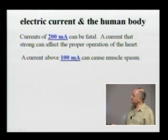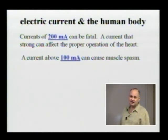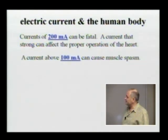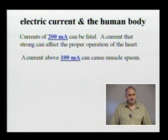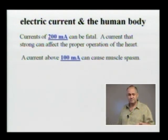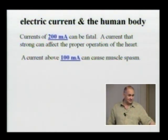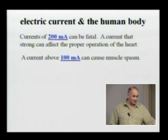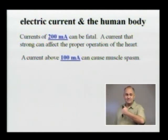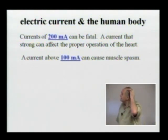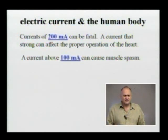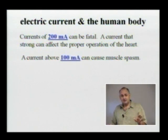Half of that current — about 100 milliamps — can cause muscles to contract, which is the real problem with electrical accidents. A person can grab a wire and be unable to release it because the electricity causes muscle contraction. So whenever you want to touch a wire to check if there is electricity, don't touch it with your palm — touch it with the back of your hand, so that if muscles contract, your hand pulls away.